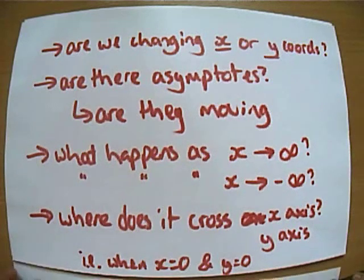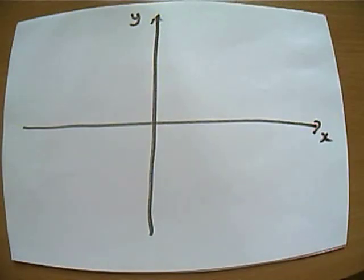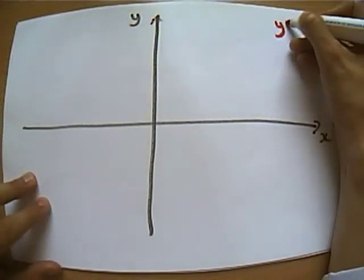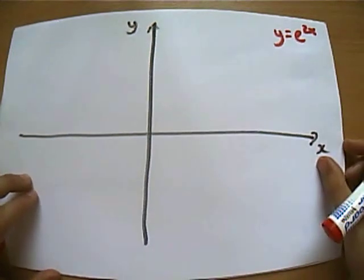We're going to start off in these cases either with the e to the x graph or the ln x graph, and then we're going to transform them according to the equations we've been given to see what we end up with. So here we go. There's a nice little set of axes to get started. And the first graph I thought we would play about with today is a nice simple one to get us going. What does the graph of e to the 2x look like?